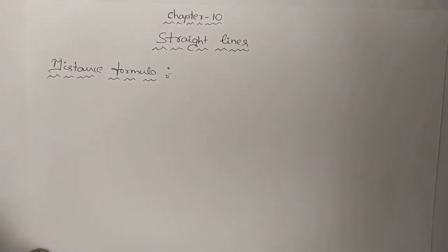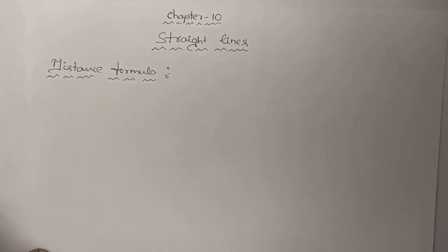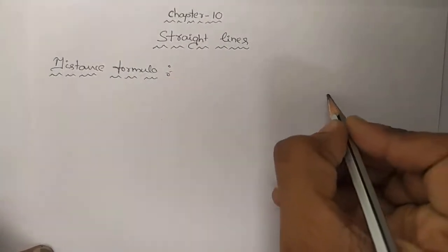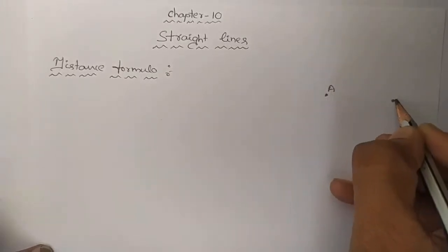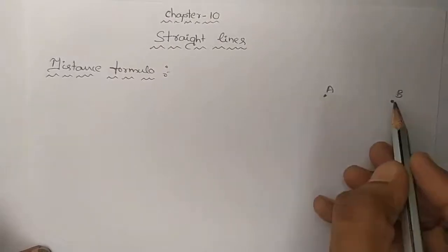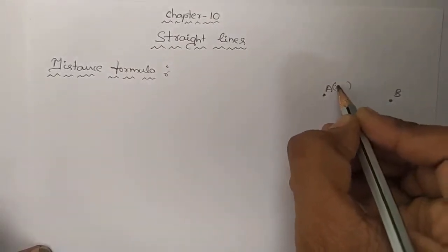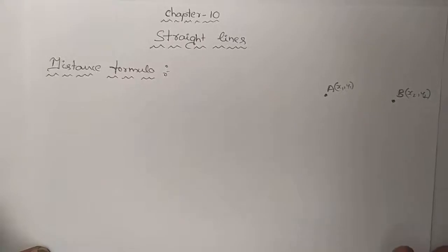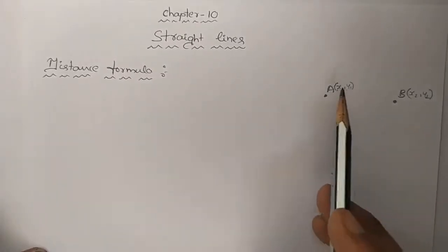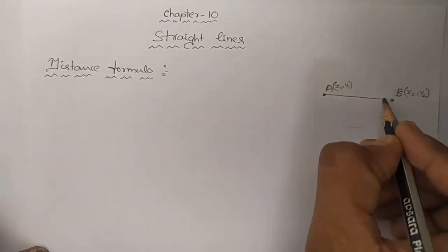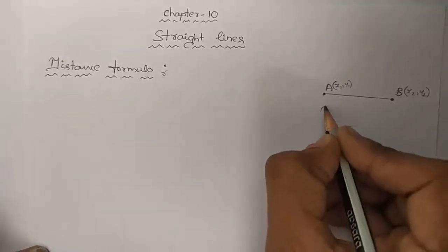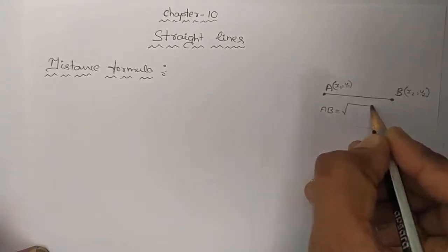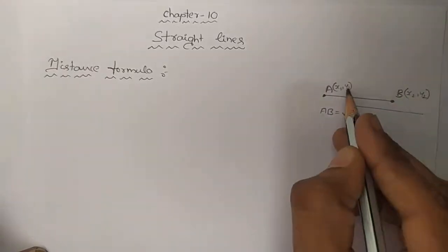So what is the distance formula? Suppose we have two points A and B in a plane, then what is the distance between the two points A and B? Suppose the point A is (x1, y1) and the point B is (x2, y2). These are the two points in a plane. The distance between two points A and B equals to square root of (x2 minus x1) whole square plus (y2 minus y1) whole square.